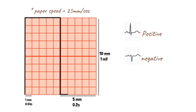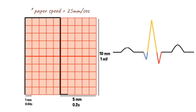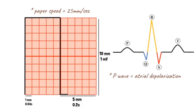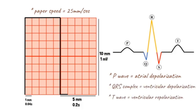On a normal ECG tracing, three waves are recognizable: the P wave, the QRS complex, and the T wave. The P wave represents atrial depolarization. The QRS complex represents ventricular depolarization. And the T wave represents ventricular repolarization.